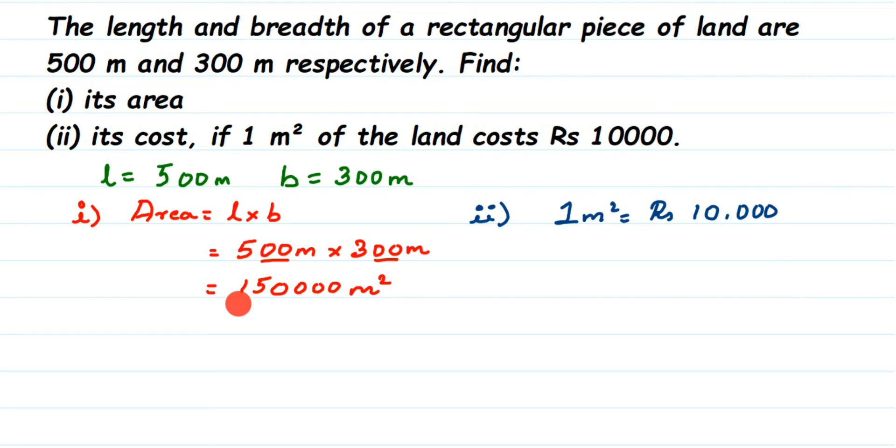One meter square is 10,000 rupees, and here how many meters we have? We have 150,000. So to get the total value we have to multiply these two. Let's find out. Total cost is equal to one lakh 150,000...